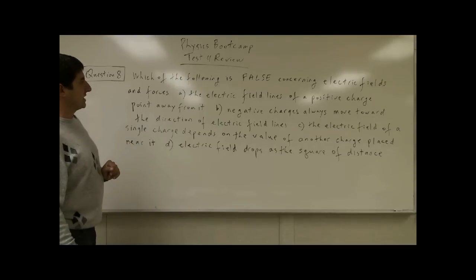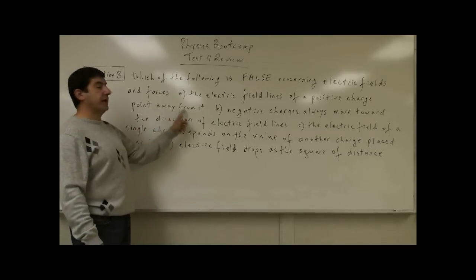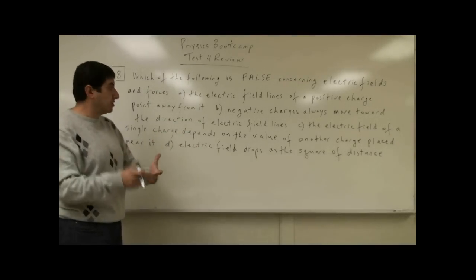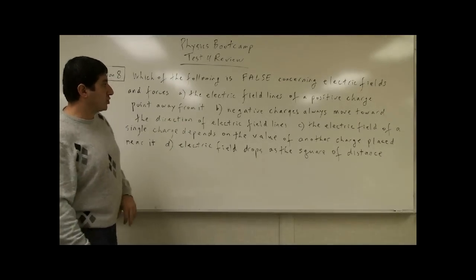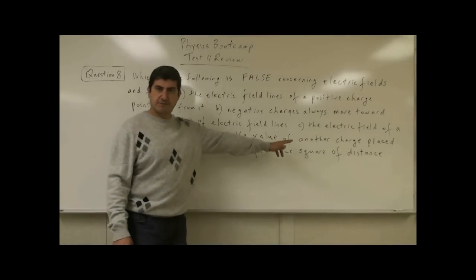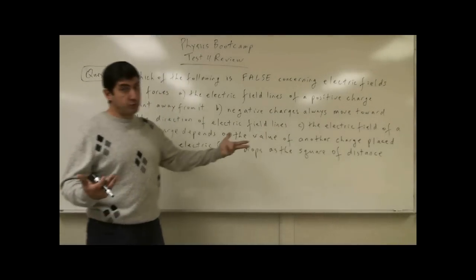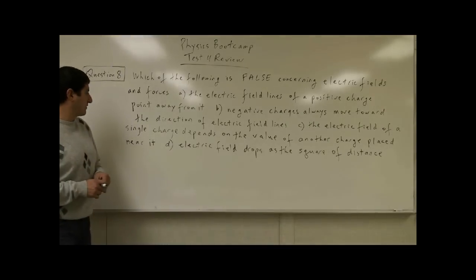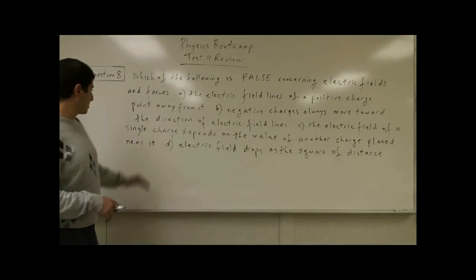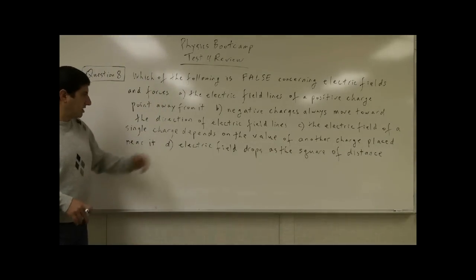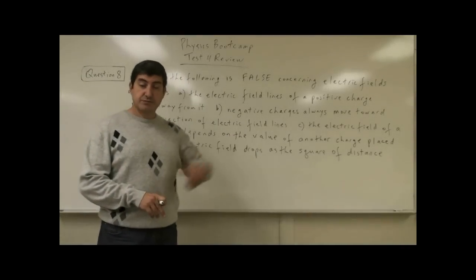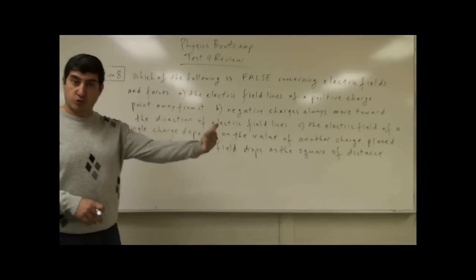A: the electric field lines of a positive charge point away from it. B: negative charges always move toward the direction of electric field lines. C: the electric field of a single charge depends on the value of another charge placed near it. D: electric field drops as the square of distance.